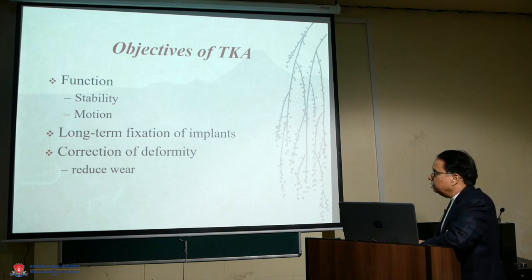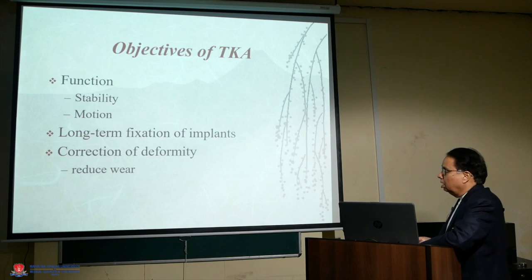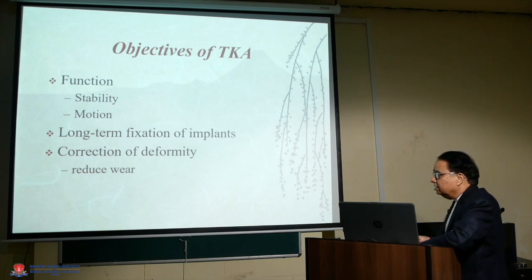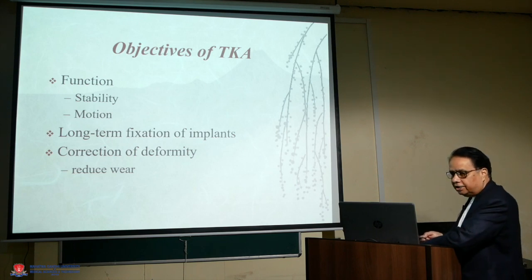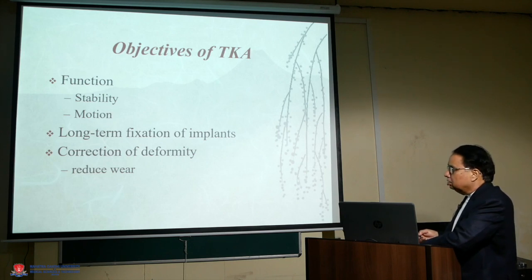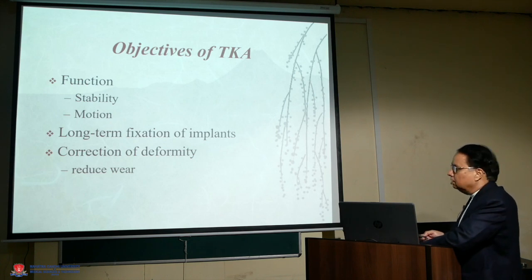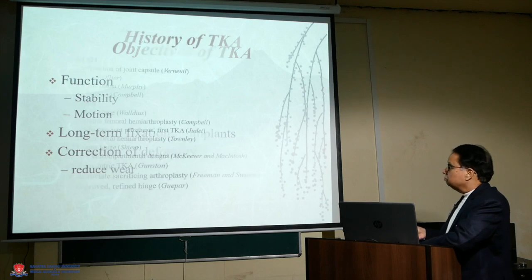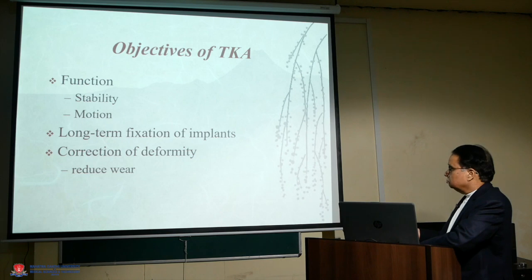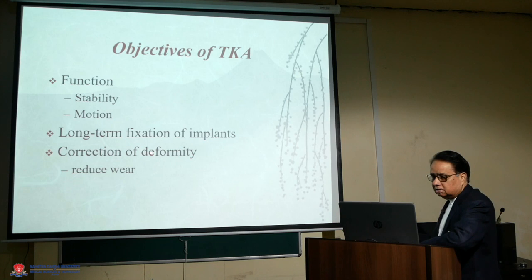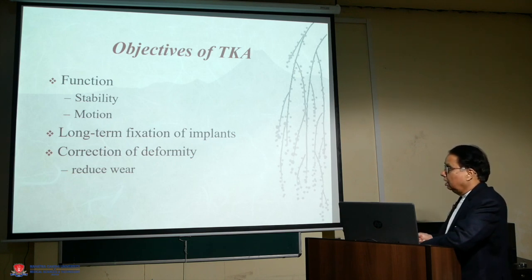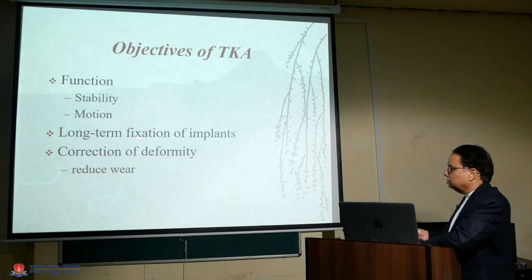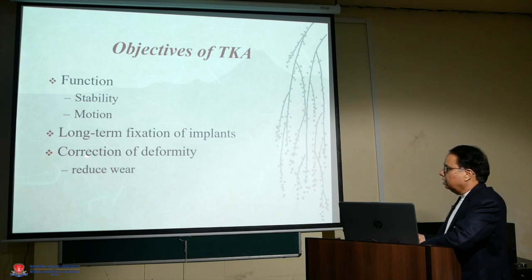The objective of doing arthroplasty of the knee joint is to achieve stability and painless motion. By putting this implant we have resurfaced the articular cartilage, which was the source of pain, so motion becomes painless. As the technique has improved, stability also varies. To achieve long-term fixation of the implant, we use the cementing process so that the implant is fixed. While choosing an implant, we also correct the deformity, and if the deformity is much more, we supplement the implant to achieve 100% deformity correction.